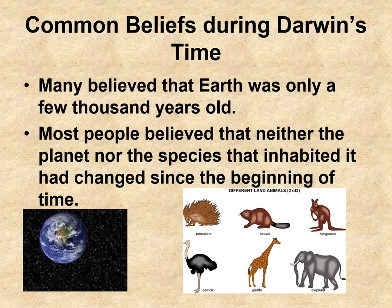Now, there were some common beliefs during Darwin's time. Many people believed that the earth was only a few thousand years old, based on biblical reference — scholars had taken the Bible and calculated how old the world was, arriving at only a few thousand years. However, we know that the earth is at least 4.6 billion years old based on data that evolutionists have gathered. Most people also believed that neither the planet nor the species that inhabited it had changed since the beginning of time.